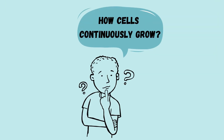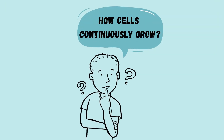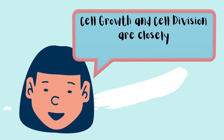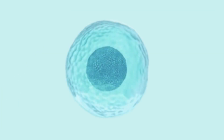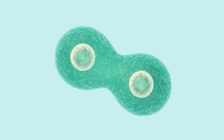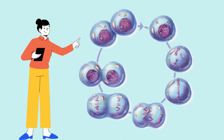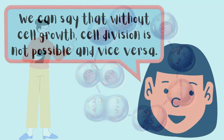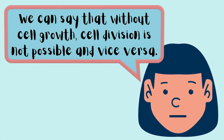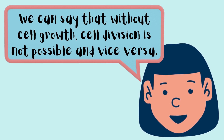Have you ever wondered how cells can be perceived by the naked eye even if they are continuously growing in size? The reason behind that is because cell growth and cell division are closely intertwined with each other. If cells continue to grow, they will not function properly. Hence, why do cells need to divide? Without one, there would be abnormalities in cellular growth and function. We can say that without cell growth, cell division is not possible and vice versa.